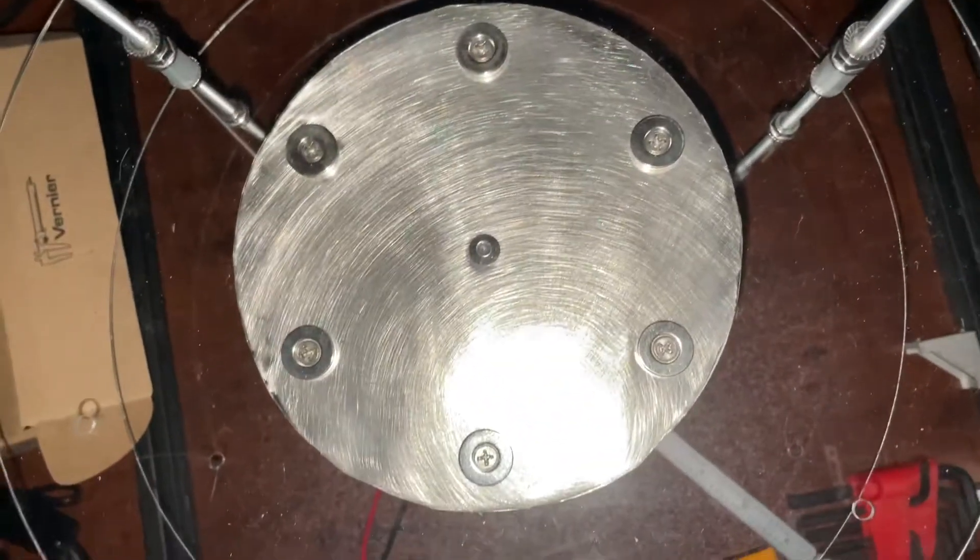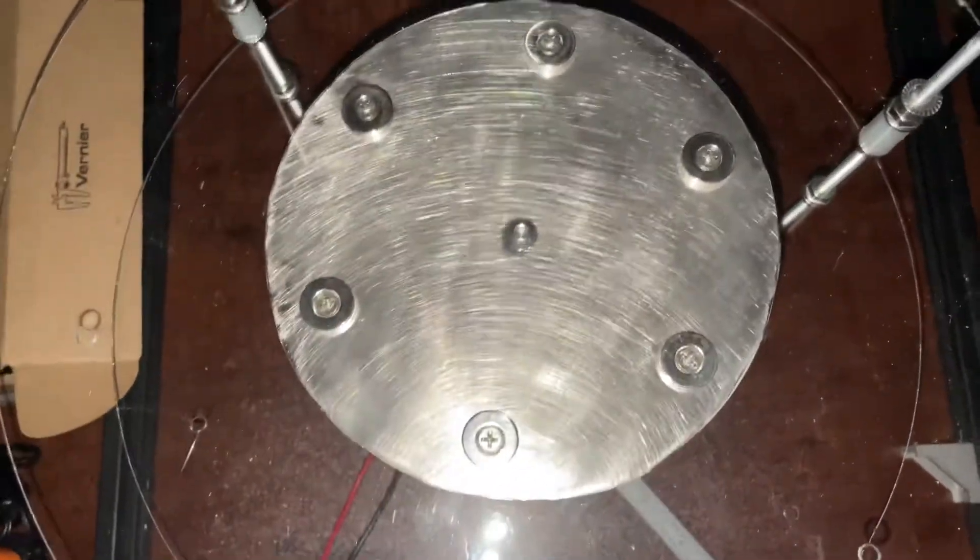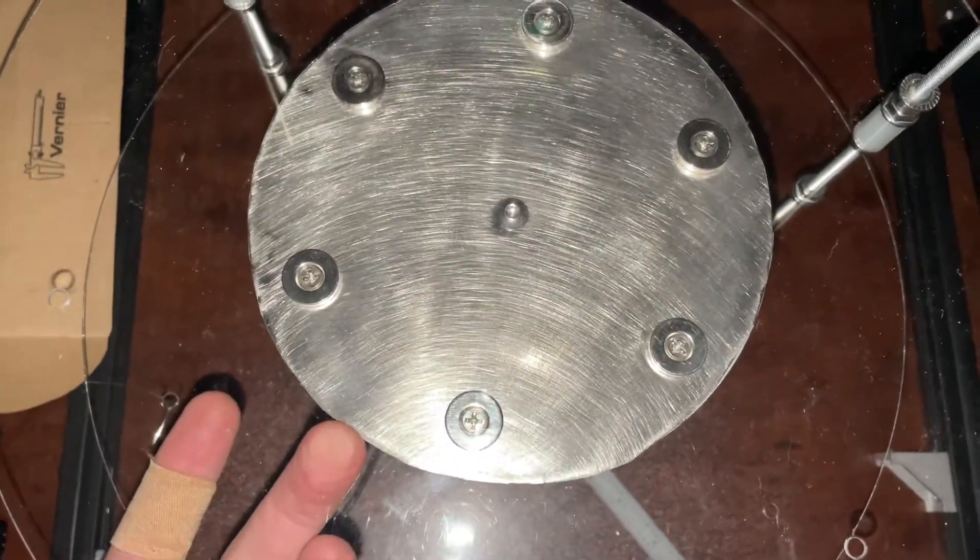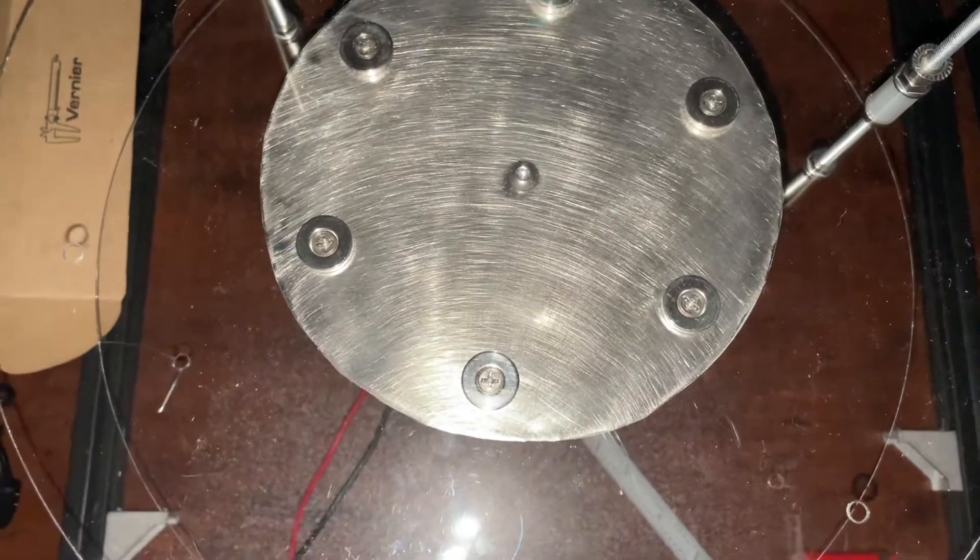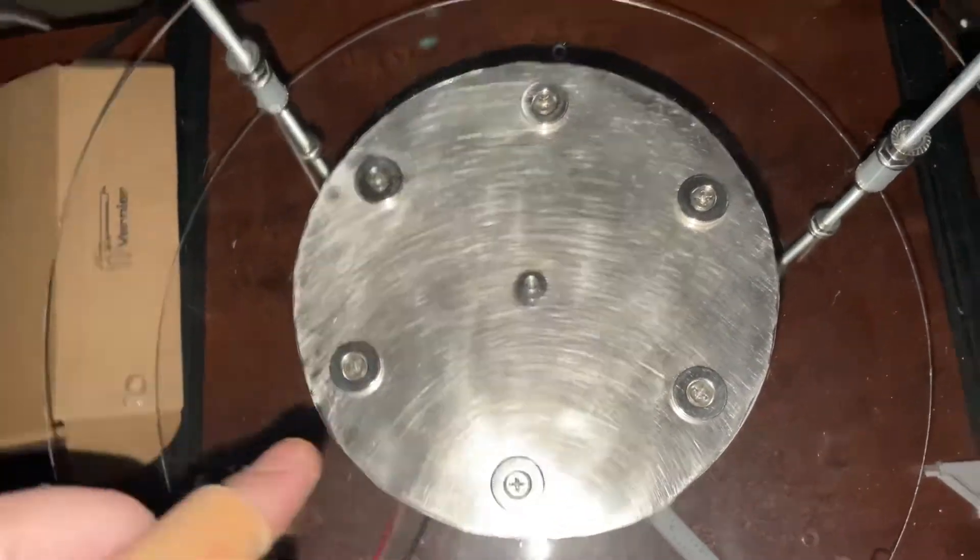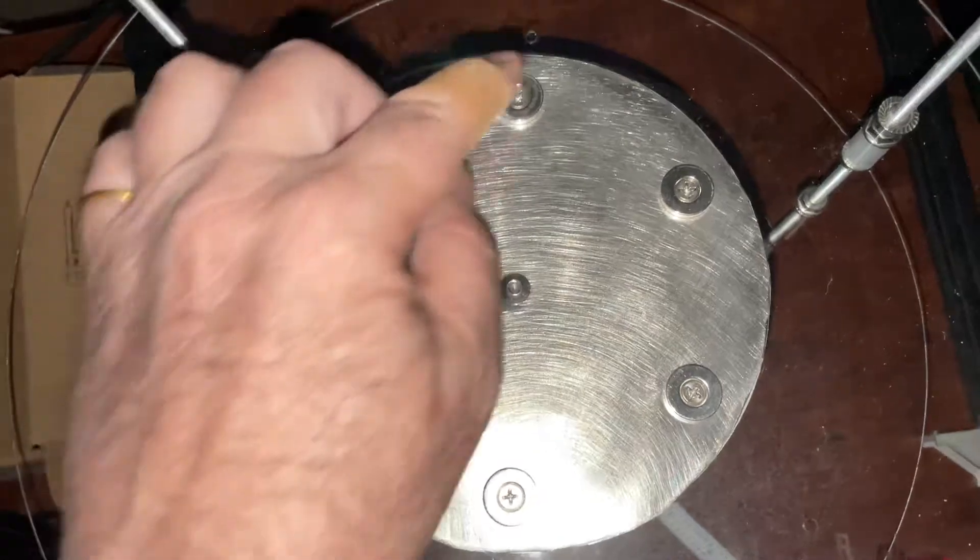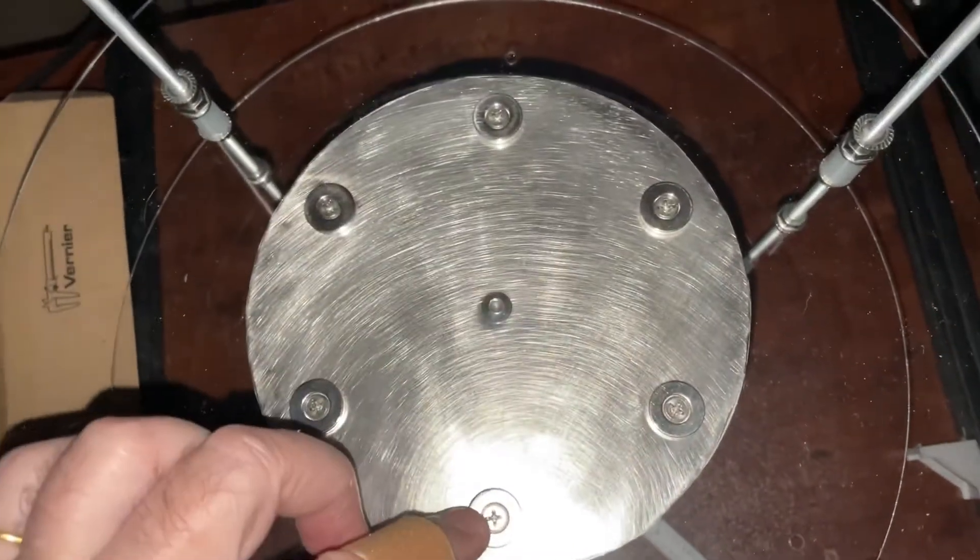This disc has a top layer that's mu metal and a bottom layer that's aluminum just like the other disc. But we have six magnets north up.